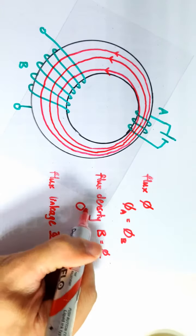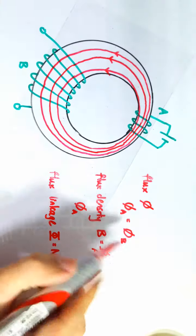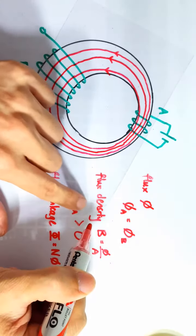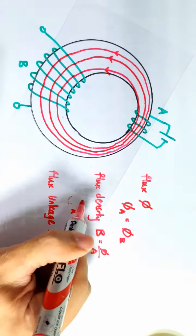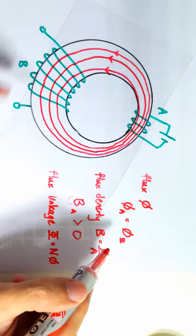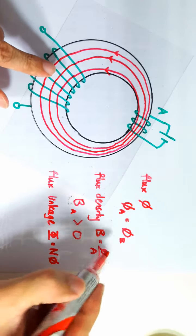So the magnetic flux density in coil A is larger... sorry, I used the wrong symbol here. So the magnetic flux density in this region here is higher than the magnetic flux density in this region here.